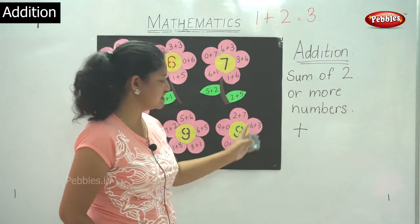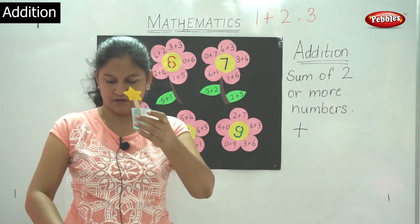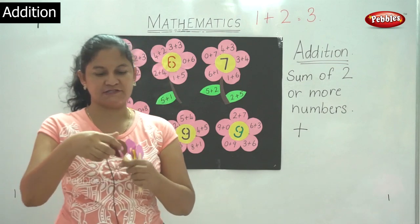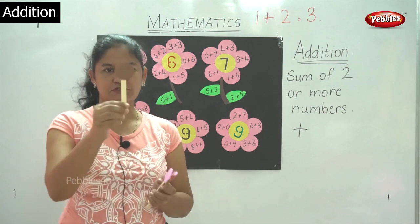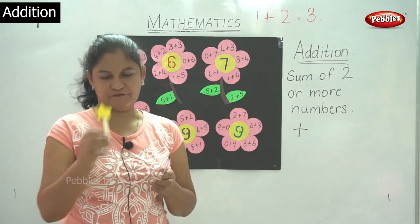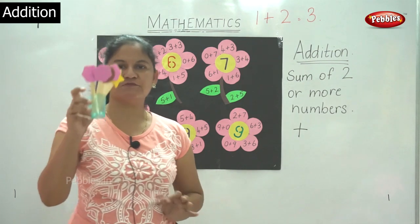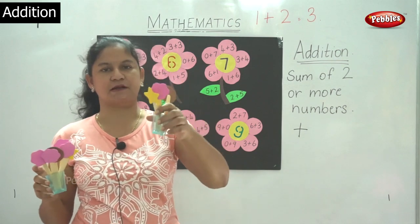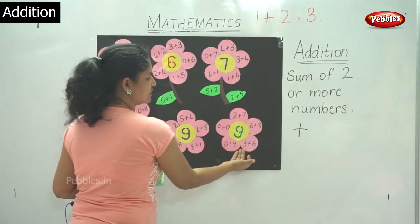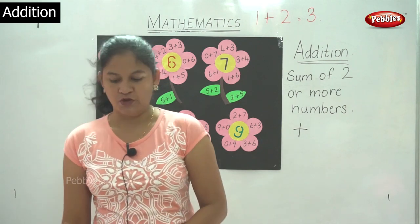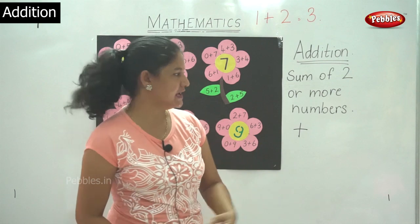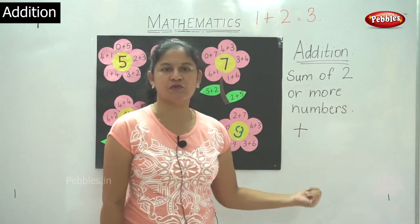Then we will move on to the next concept which is 3 plus 6. So I am placing 3 ice creams: 1, 2 and 3. And in the other cup I am placing 1, 2, 3, 4, 5 and 6. So I have 6 ice creams in one cup and 3 in the other. So 6 plus 3 will give me 9 or 3 plus 6 gives me 9. Addition is finding the sum of 2 or more numbers, and plus is the sign that we use when we want to add.